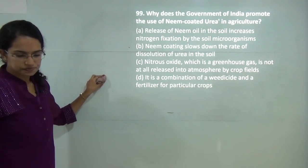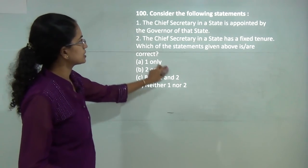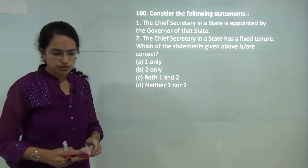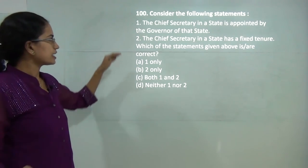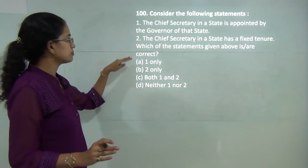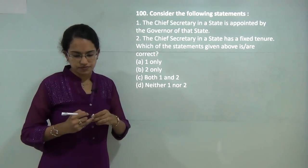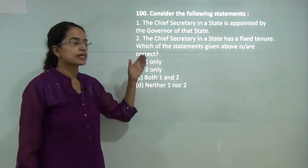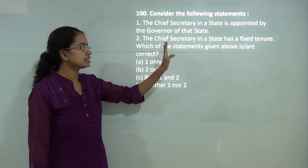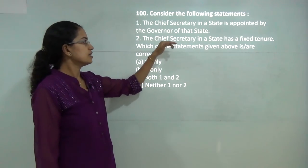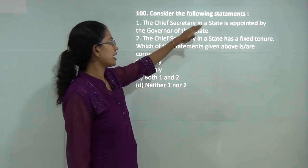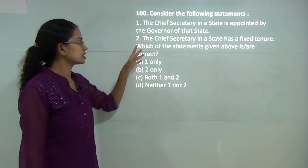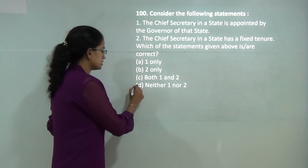The next question asks which of the following statements are correct. Neither A nor B is correct because the Chief Secretary has no fixed tenure and is not appointed by the Governor — it is appointed by the Chief Minister. So both statements are incorrect, and D would be the answer here.